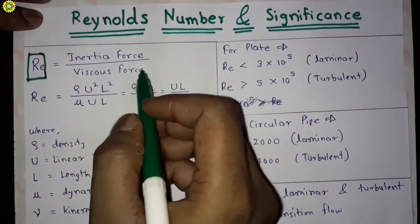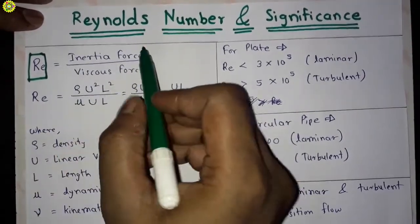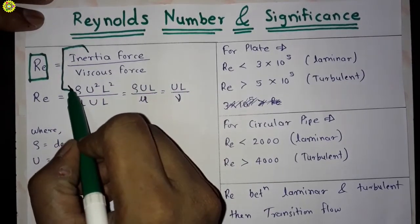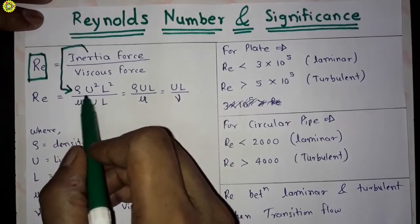Here, this inertia force is given by the formula rho u squared l squared.